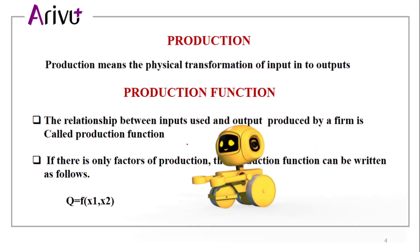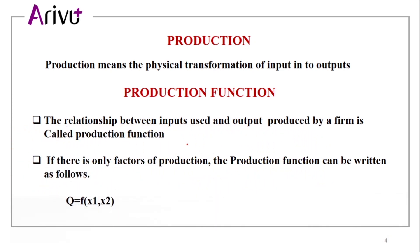What is production? Production means the physical transformation of inputs into outputs. For example, in food preparation like cake, the inputs are egg, vanilla, sugar, and whipping cream. The final product is the output. This physical transformation is what we call production.